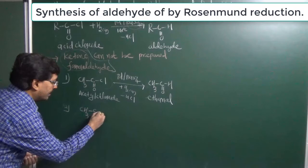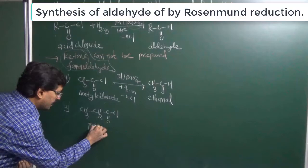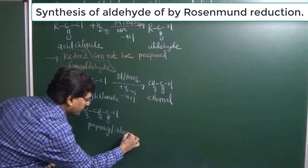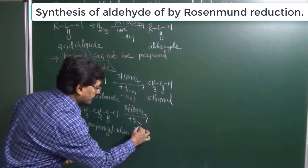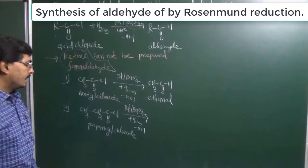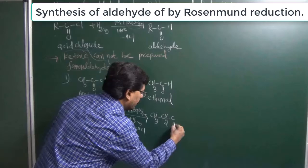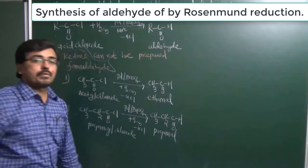Similarly, we can prepare a variety of other aldehydes. Suppose we have taken propanoyl chloride. Reduction is done by using the same method — Palladium over Barium Sulphate. Hydrochloric acid will be removed; chloride combines with hydrogen and removes as HCl. As a result we get the structure CH3CH2C double bond O-H. This structure is known as propanal.